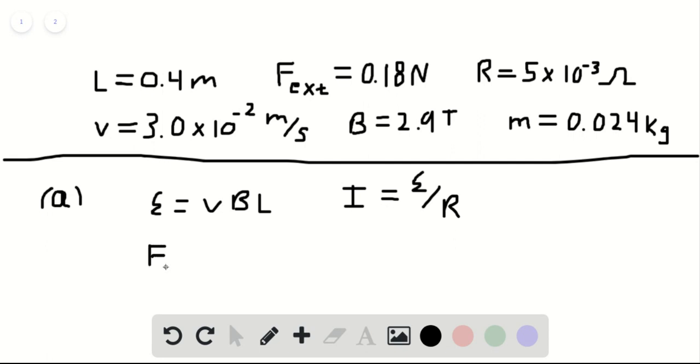Therefore, the force from the magnetic field B is equal to I times B times L, which is equal to V times B squared times L squared divided by R.